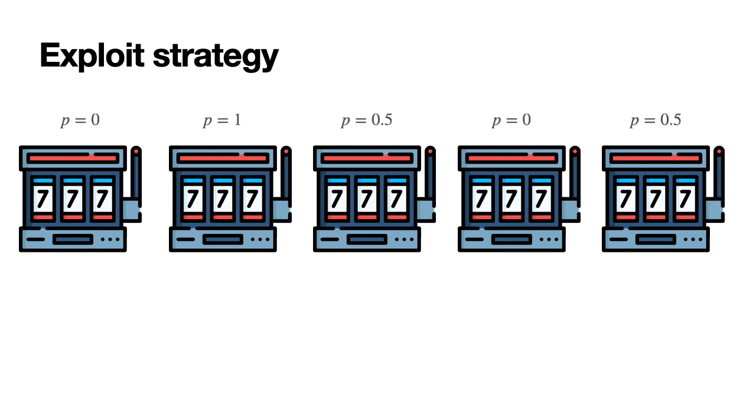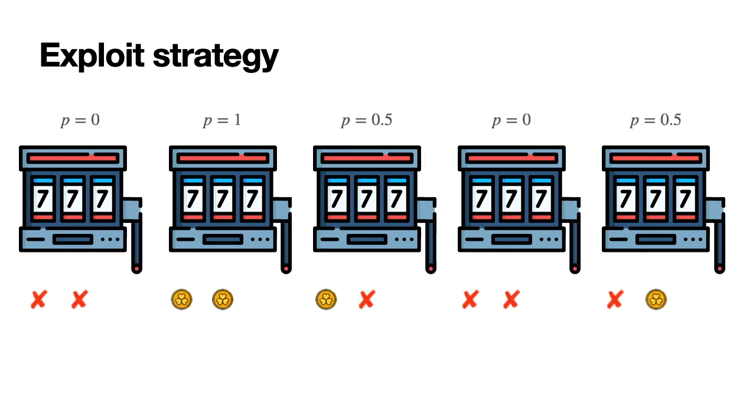We come to the second strategy, which is the exploit strategy. We play each machine less times, let's say just two. And from there, we look at the data and conclude that the best machine is the second one. And the other ones are not very good.